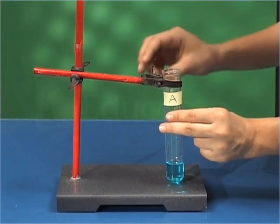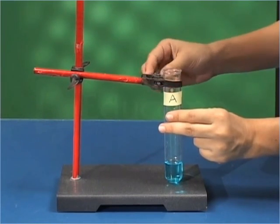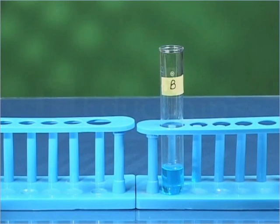Fix test tube A on the clamp stand and keep test tube B as control sample in test tube stand.